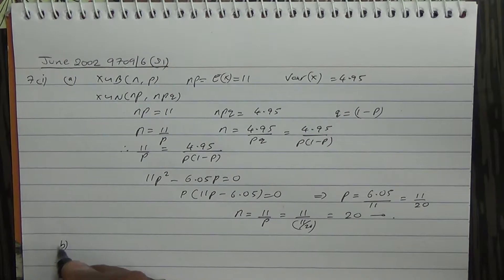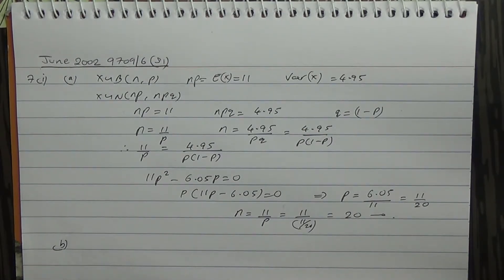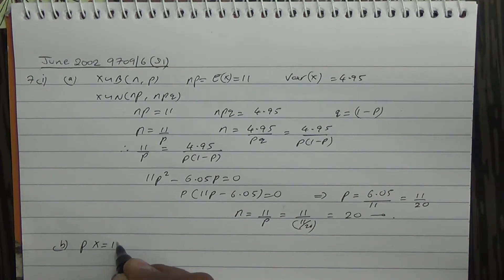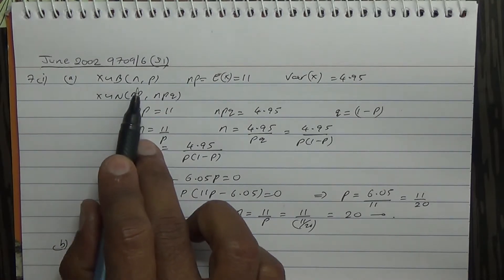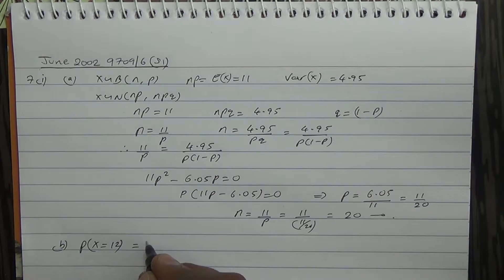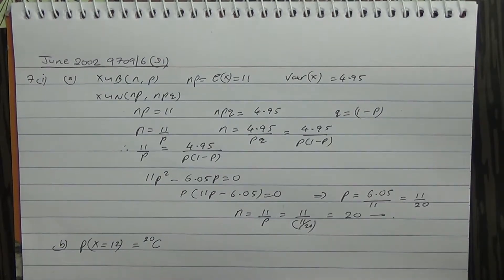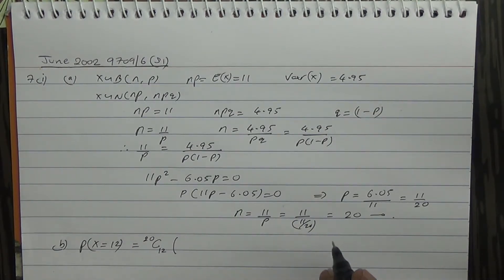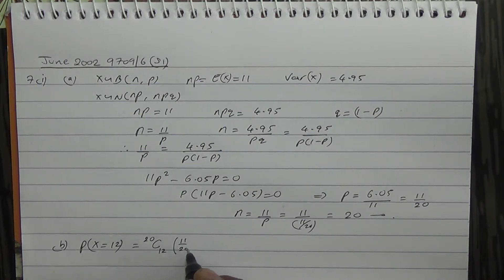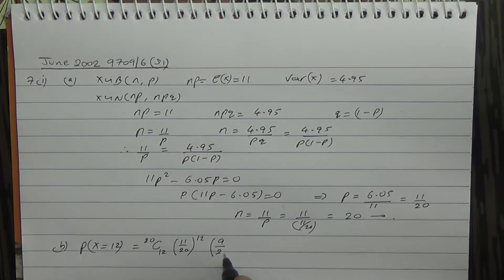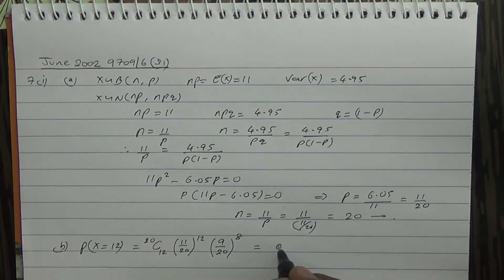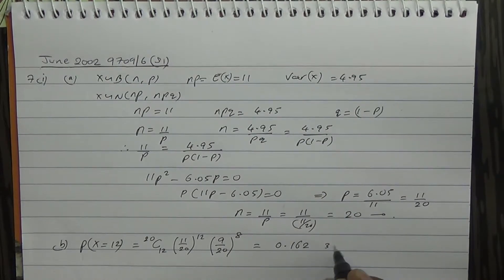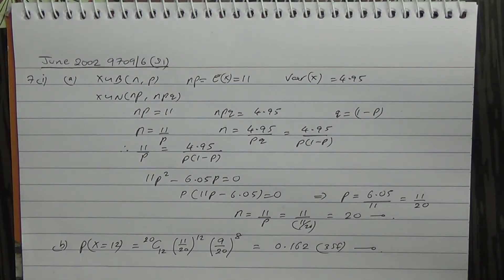For part B, we have to find the probability that a box contains exactly 12 plants, so P(X = 12). Since this is a binomial distribution with N = 20, we use the binomial formula: 20C12 times (11/20) to the power of 12 times (9/20) to the power of 8. Working this out in your calculator, you should get 0.162 to 3 significant figures.